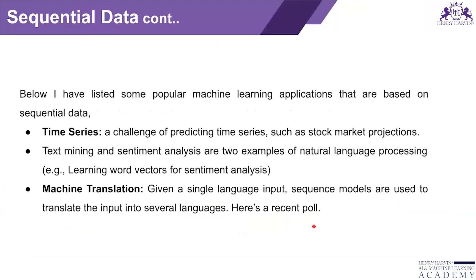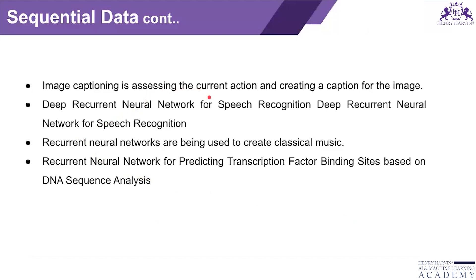Basic examples of sequential data applications include time series data and machine translation. In time series, we predict values such as stock market projections. Text mining and sentiment analysis are also examples. In machine translation, you provide input in one language and the sequential model converts it to a different language. Image captioning assesses the current action and creates a caption for an image. Speech recognition uses deep recurrent neural networks. You can also use sequence models for creating music.